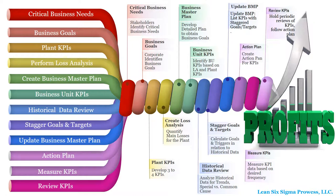These 12 steps are: 1. Understand the critical business needs of the company as established by the company's stakeholders. 2. Based on the critical business needs, corporate identifies the business goals and objectives that will be the primary focus for the given year. 3. At the individual site level, three to four key performance indicators are established for the entire site to focus on for the given year. 4. A loss analysis is performed in order to identify and quantify the largest losses on the site. 5. Based on the critical business needs, business goals, and loss analysis, a master plan is created. The master plan details the strategy of how the company plans to satisfy the critical business needs, as well as the projects and or activity, the time frame, the person responsible, and the corresponding goal.